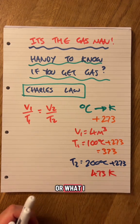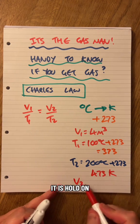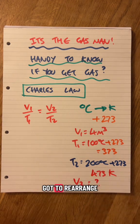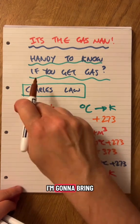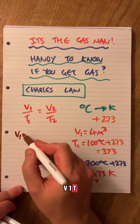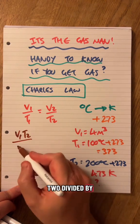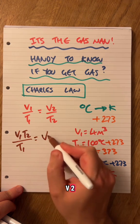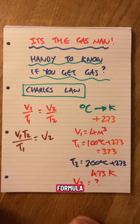And I want to find V2. I don't know what it is. Got to rearrange this formula. I'm going to bring the T2 up. I'm going to go V1 times T2 divided by T1 equals V2. Just rearranging that formula.